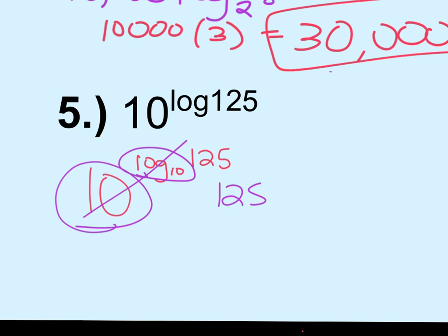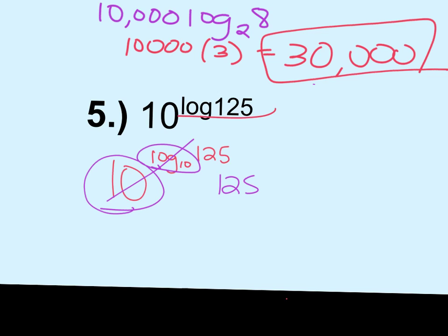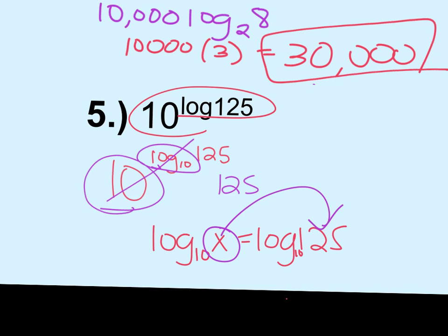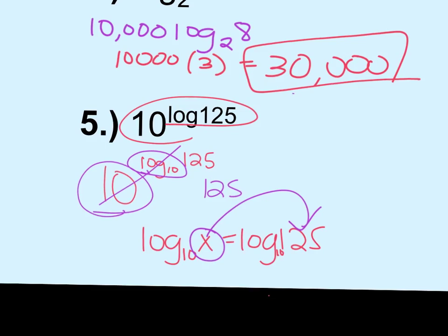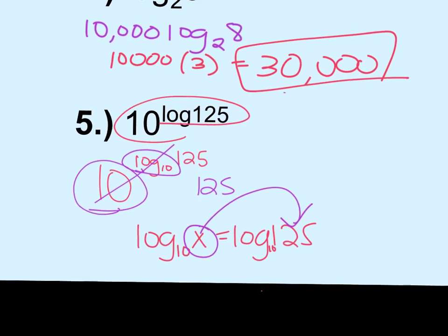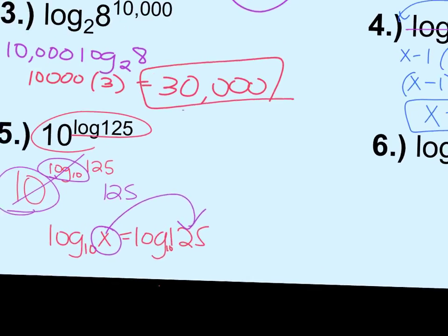The other option is to bring this into log form. So this would be log base 10 of x equals log 125. This is still log base 10. And then I'd end up with x being 125. So we're going to deal, that's a one-to-one property. And we're going to deal with it a little bit more the rest of the chapter. But it can be used.